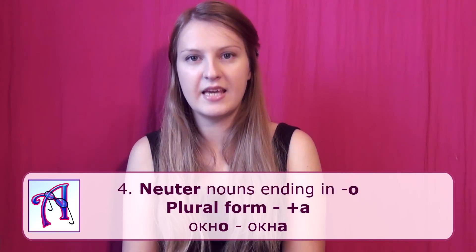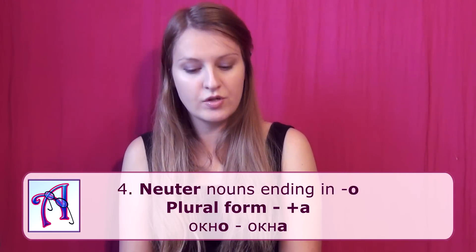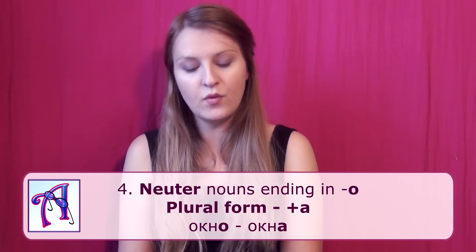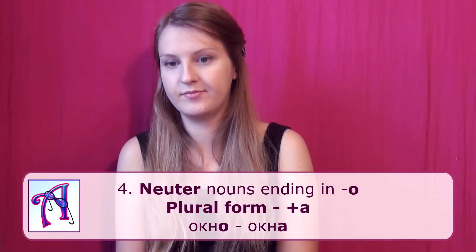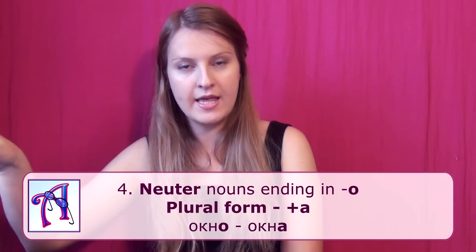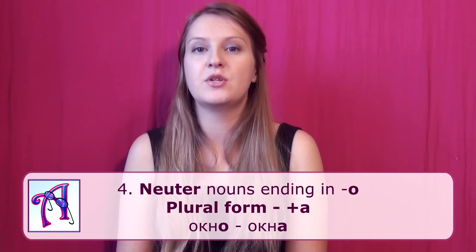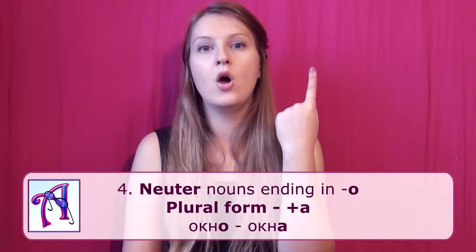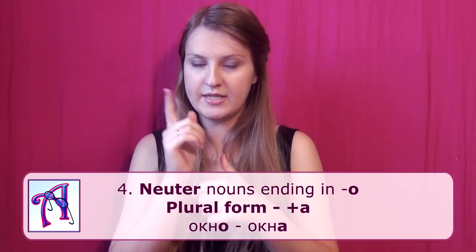The next case is neuter nouns ending in О. If you want to create a plural form, you use the ending А. For instance, окно — a window — becomes окна. Notice that in this case the stress is changed. In this lesson we are not going to talk about the stress; we are going to continue talking about plural forms. So stay tuned.